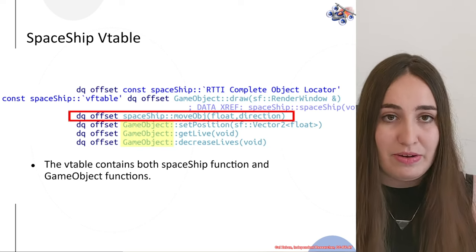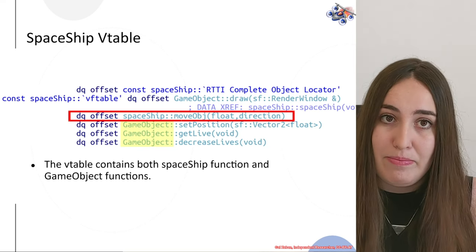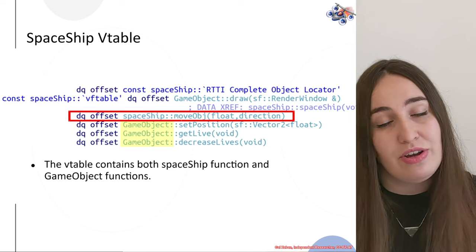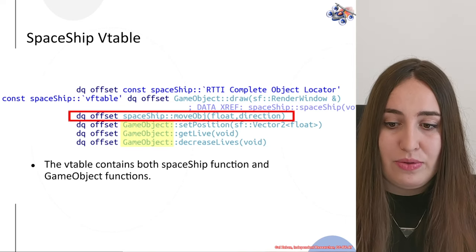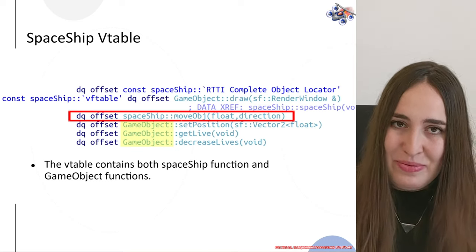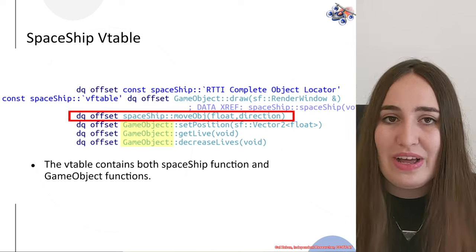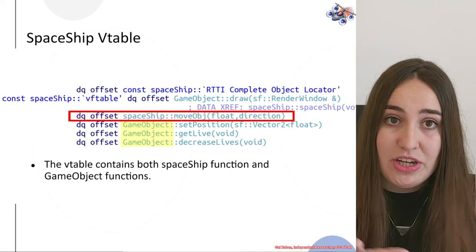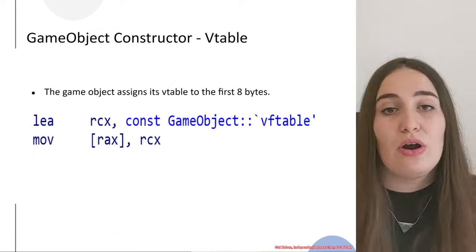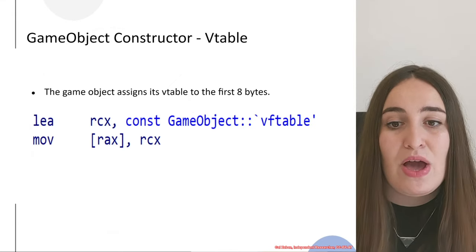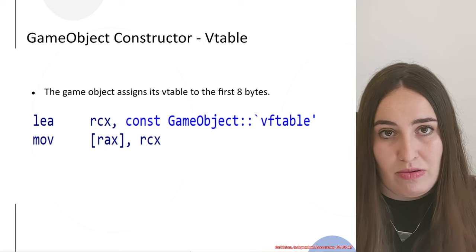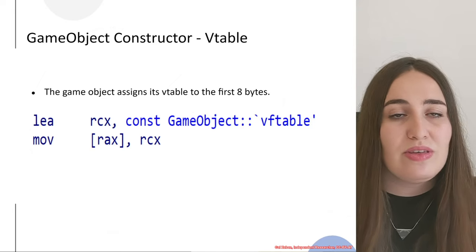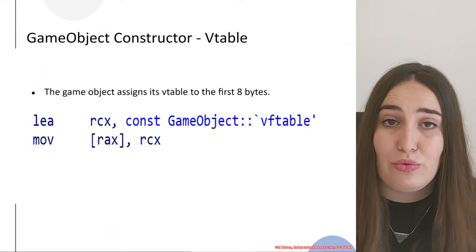In cases without symbols, you have to go into the functions and research the vtables and functions themselves to understand which function is relevant to which object. I will also show how we examine the vtable of the base class constructor, which shows how to connect which function is relevant to which object. We want to examine the game object constructor to understand exactly those connections between the functions of game object and spaceship.